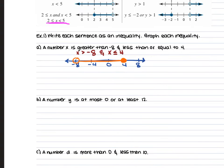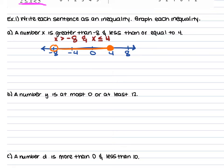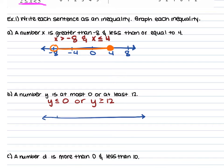For part B, a number y is at most 0 or at least 12. 'At most' means less than or equal to, so y ≤ 0. 'At least' means greater than or equal to, so y ≥ 12. Your variable comes first on both, and your signs point away from each other. On the number line, you have a closed circle on 0 with the line going left, and a closed circle on 12 with the line going right.